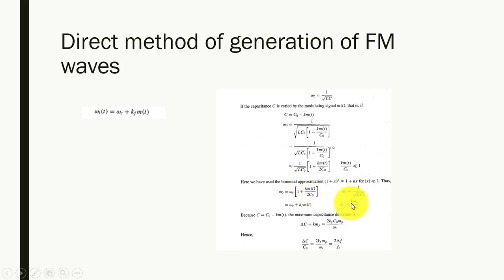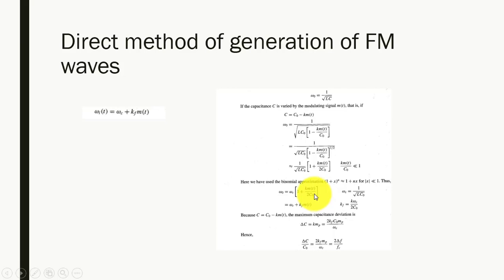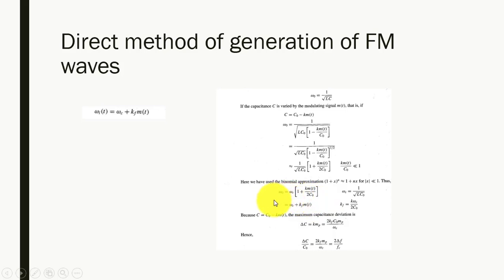If we assume that K·ω_c / (2C₀) = K_f, then we can replace K·ω_c / (2C₀) with K_f. Multiplying ω_c inside the bracket, the expression becomes ω₀ = ω_c + K·ω_c·m(t) / (2C₀). With the assumption K_f = K·ω_c / (2C₀), this becomes ω₀ = ω_c + K_f·m(t), which matches the standard FM frequency expression.